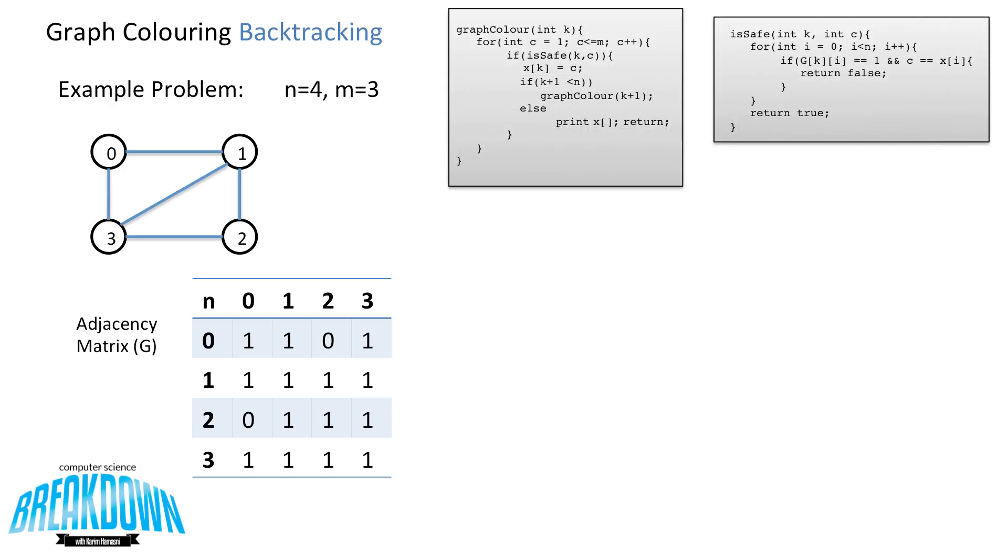So let's walk through a few iterations of this recursion so we can see what's going on here. First we call graphColour(0). So we're trying to color in the node 0 in the graph to the left. So K in this case is equal to 0, and it starts the loop, setting the first C equal to 1 in that for loop. Now it wants to check if coloring node 0 with red, 1, is safe. So it passes in K0, C1 into isSafe.